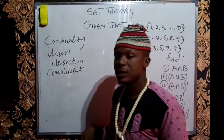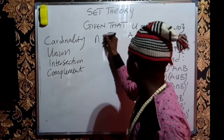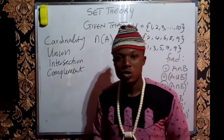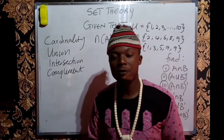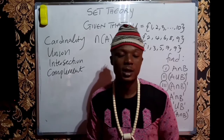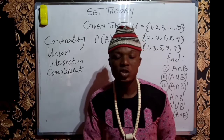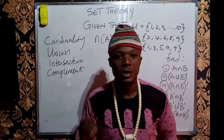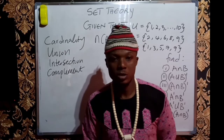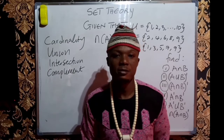When you talk about the cardinality of a set — let's say set A — written as N of A, it is just the number of elements present in set A. For example, Anambra state in Nigeria has 21 local government areas, so the cardinality of the local government areas in Anambra state is 21. If you are five in your family, the cardinality of your family members is just five.